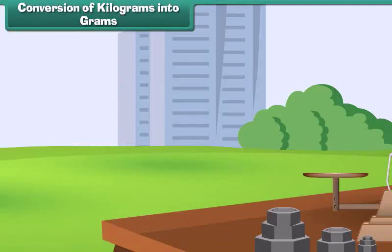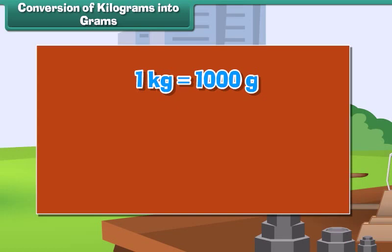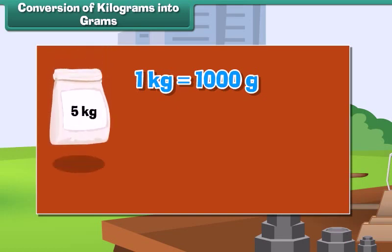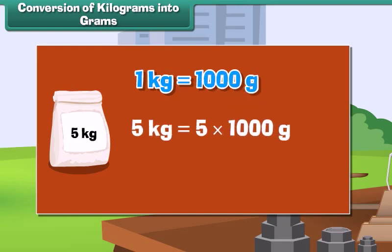Conversion of kilograms into grams: 1 kilogram is equal to 1000 grams. Therefore, the weight of a 5 kg rice bag can be calculated as 5 kg is equal to 5 into 1000 grams, which equals 5000 grams.